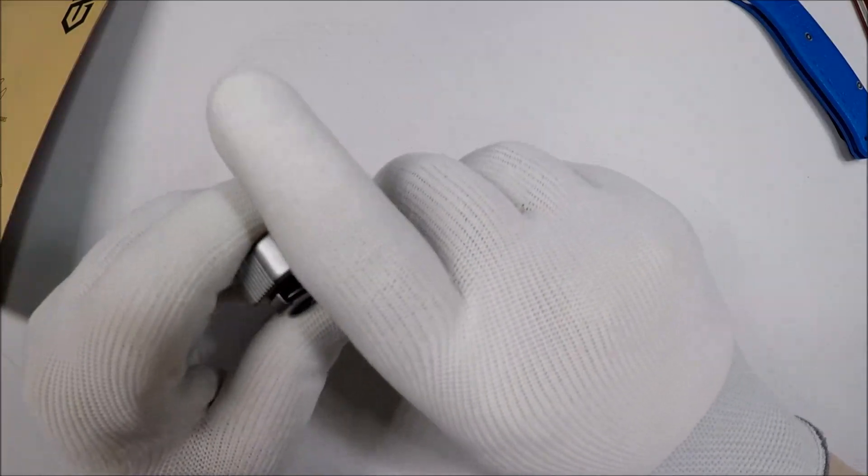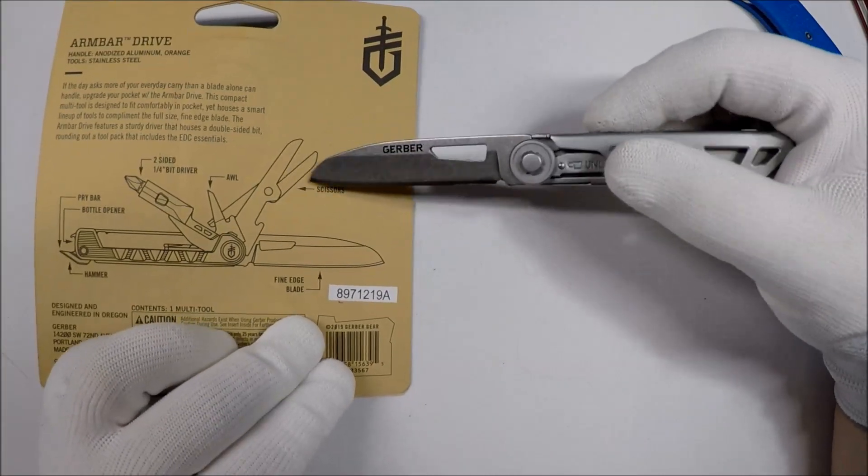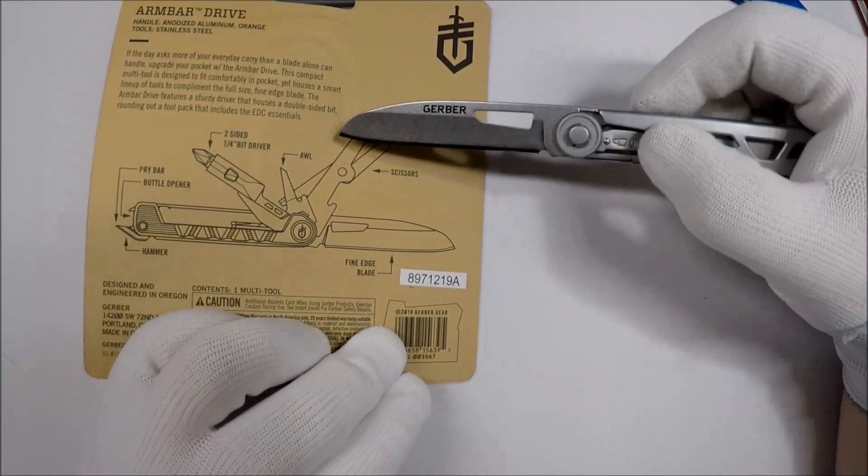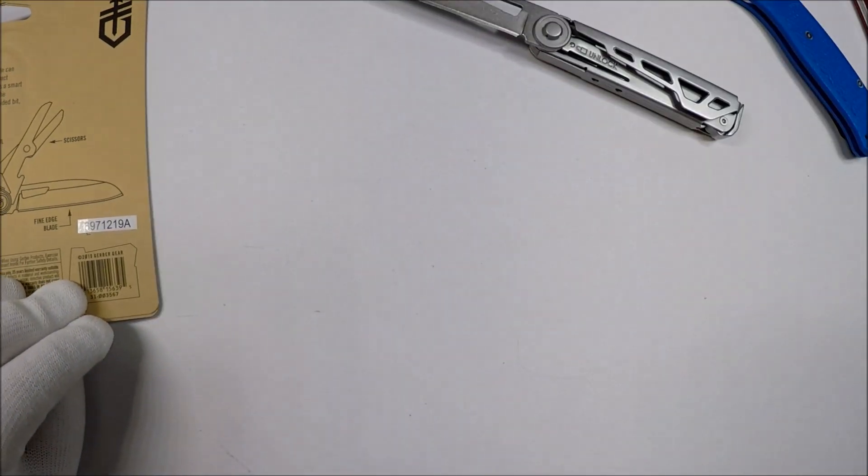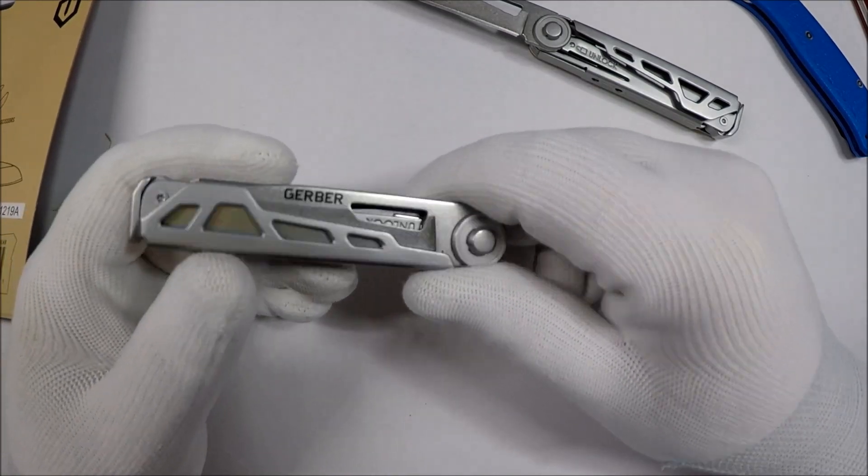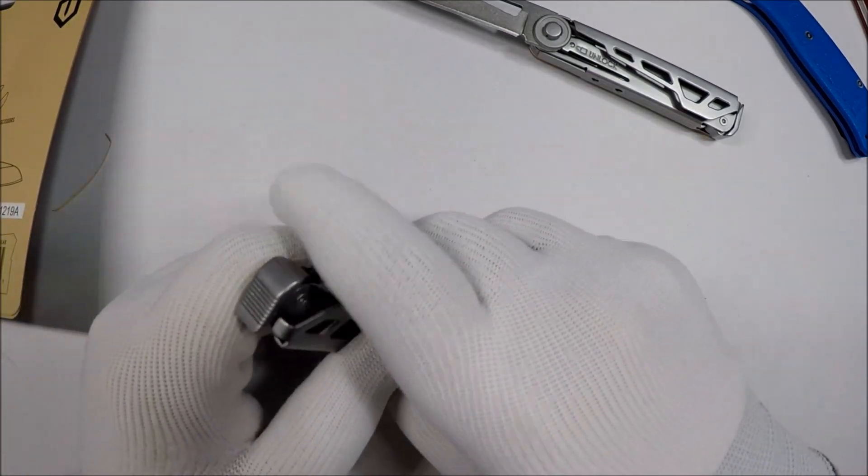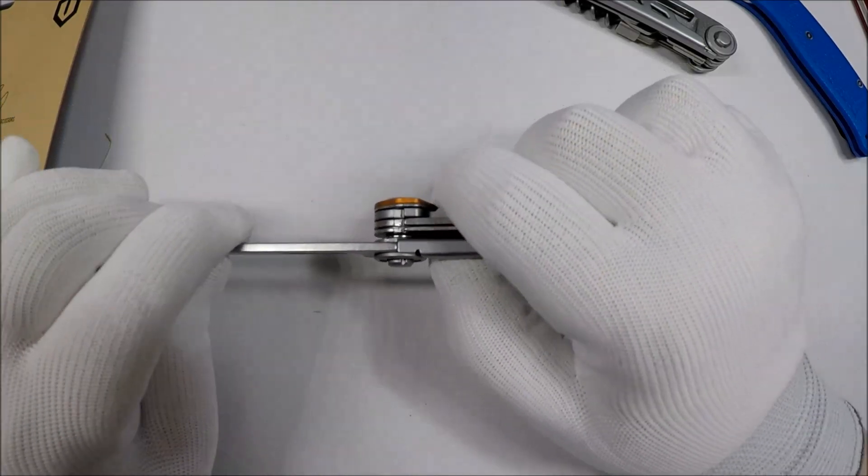So we got the knife blade. We got the scissors. The last one had, actually I can just grab the last one, it's within reach. So the last one had the knife blade, and this one has the knife blade with the frame lock, which I actually like.